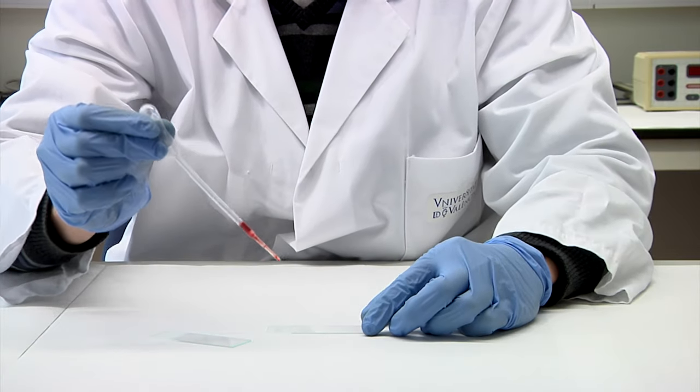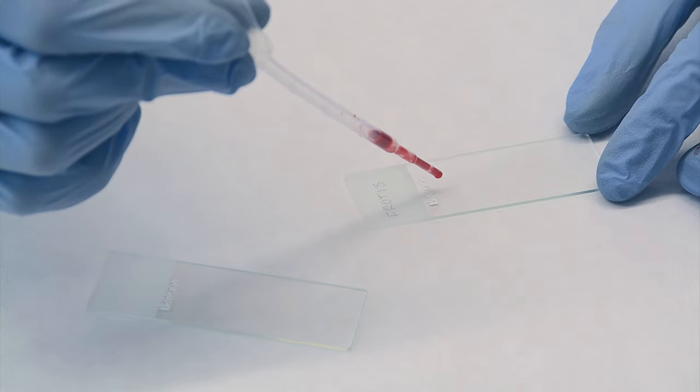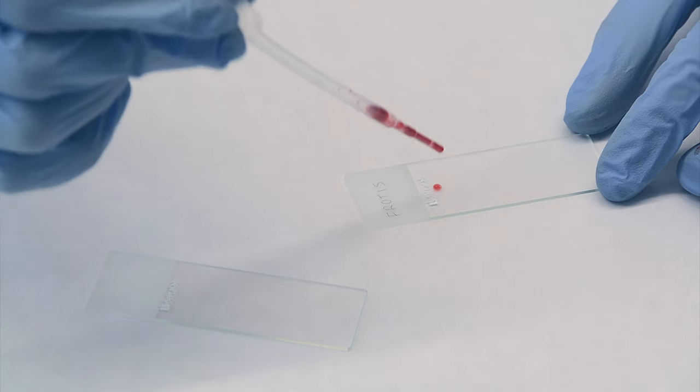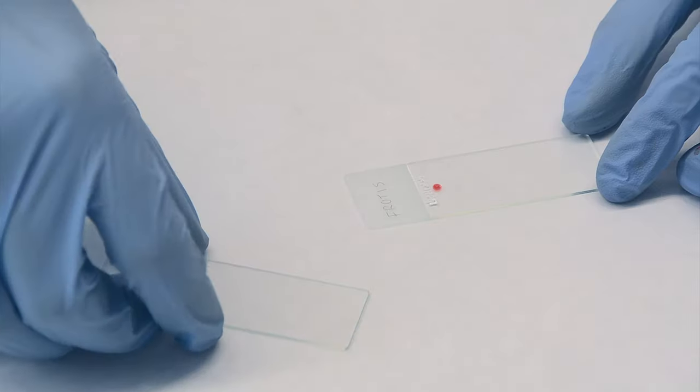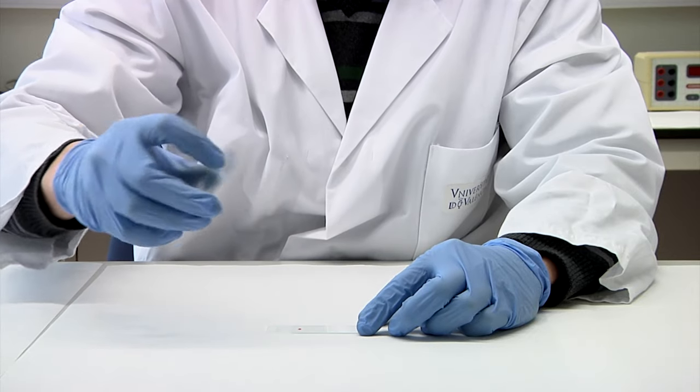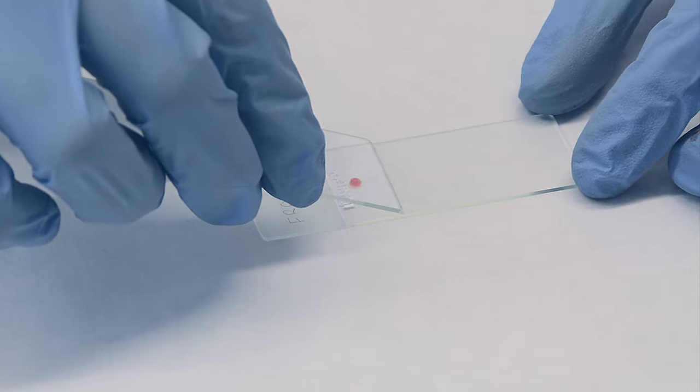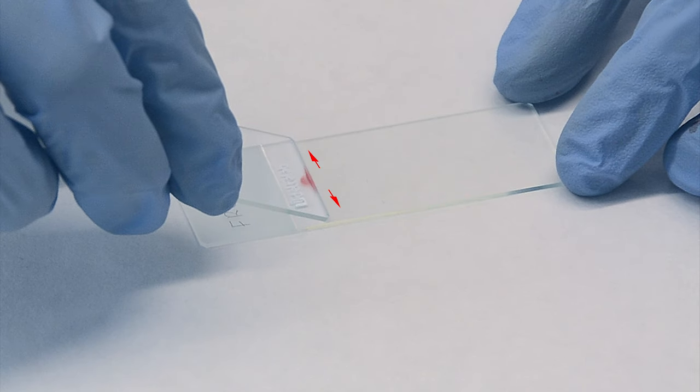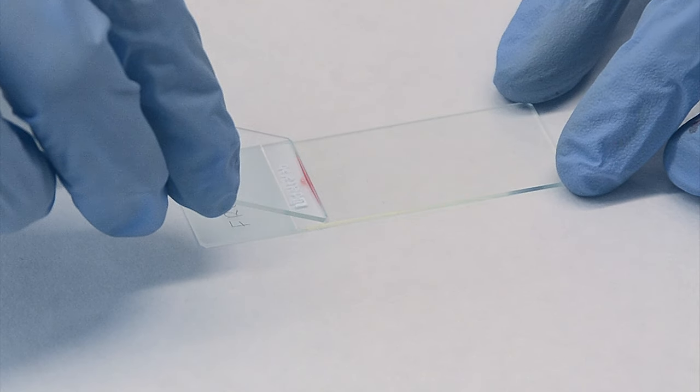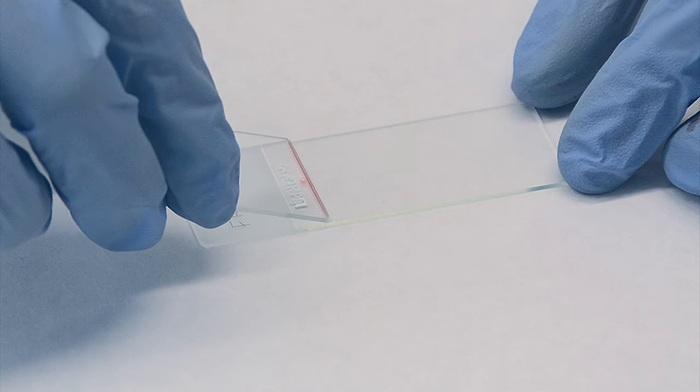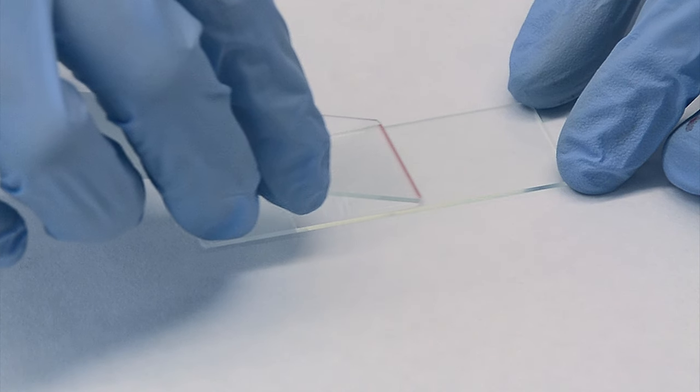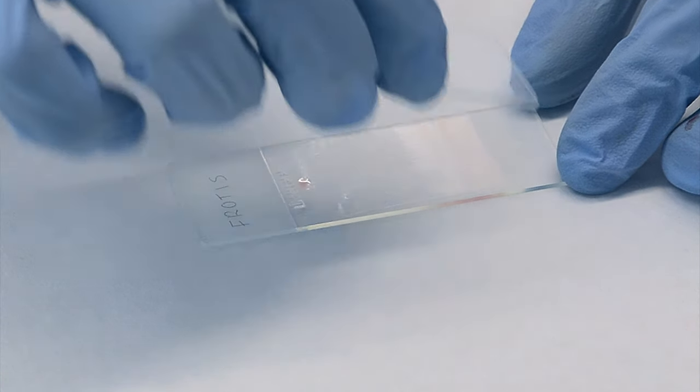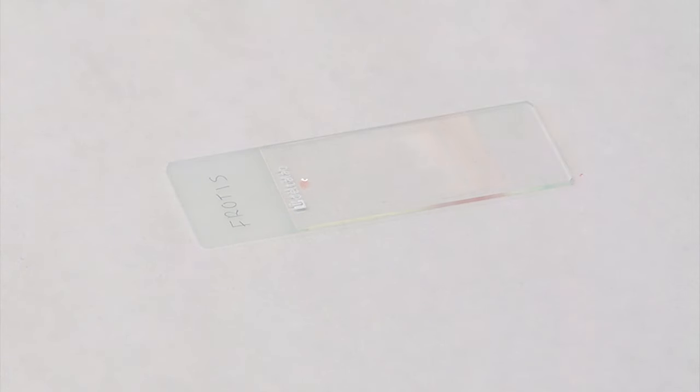A drop of blood is deposited at the end of the slide. Next, take another clean slide and holding it at an angle of about 45 degrees, touch the blood with one end of the slide, so the blood runs along the edge of the slide by capillary action. Push carefully along the length of the first slide to produce a thin smear of blood. It is very important to do it quickly and uniformly. Once the smear is done, let it dry in the air.